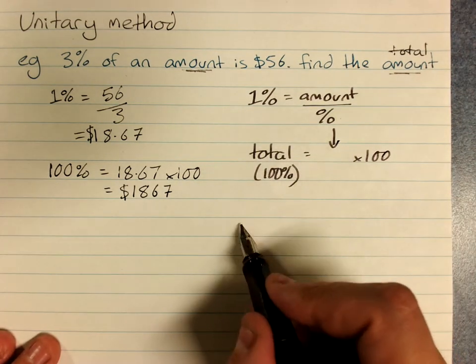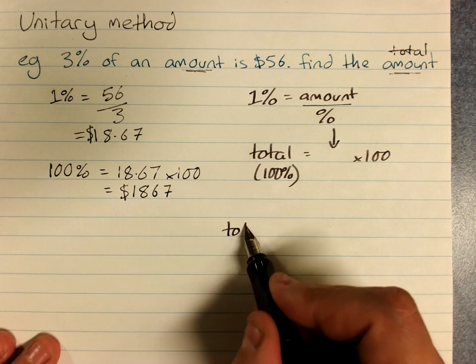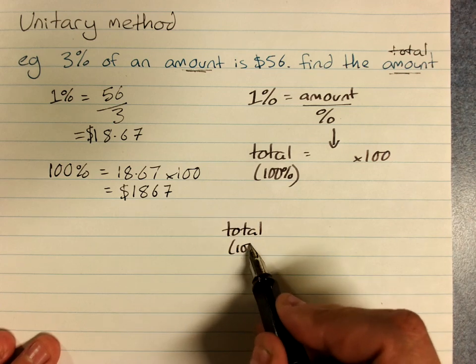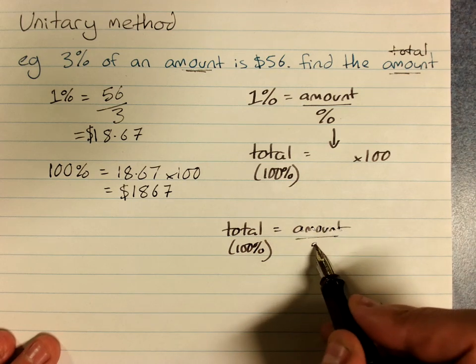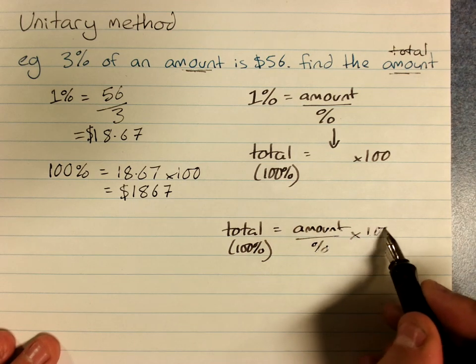If you would prefer, you can combine these, so that all up, the total, which is 100%, equals the amount divided by the percentage times 100.